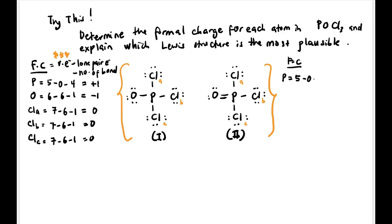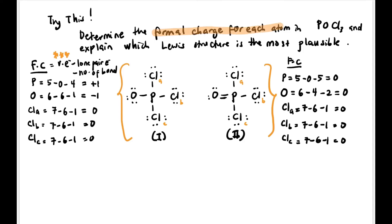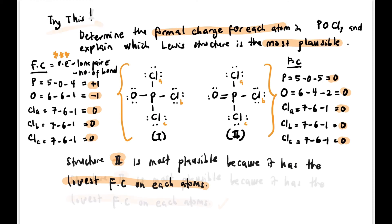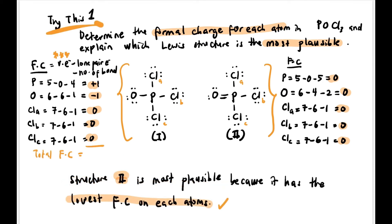For Structure 2 of POCl3: P — 5 valence − 0 lone pair − 5 bonds = 0. O — 6 − 4 lone pair − 2 bonds = 0. Cl-A — 7 − 6 − 1 = 0. Cl-B and Cl-C also = 0. Total = 0. The most plausible structure is Structure 2, because it has the lowest formal charge on each atom — all zeros. Also note: the total formal charge for each structure equals 0 since both are neutral compounds.